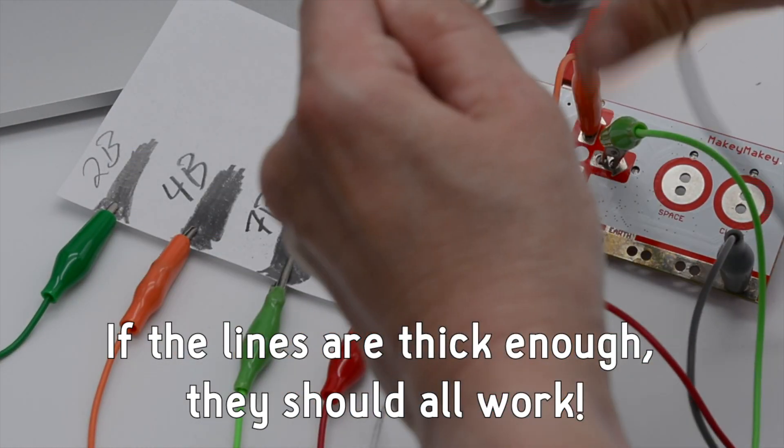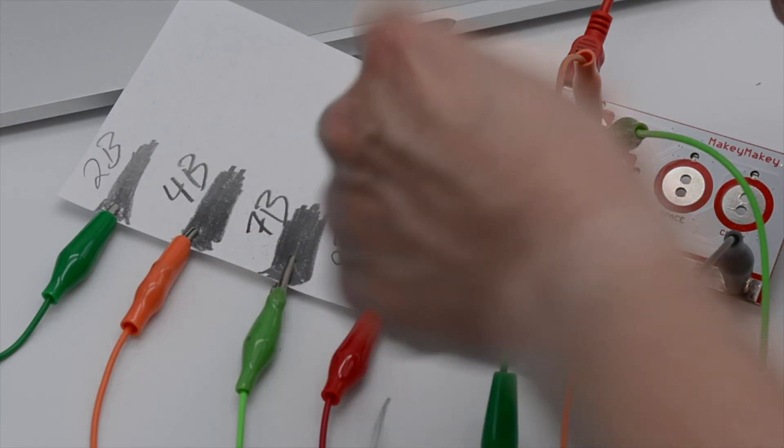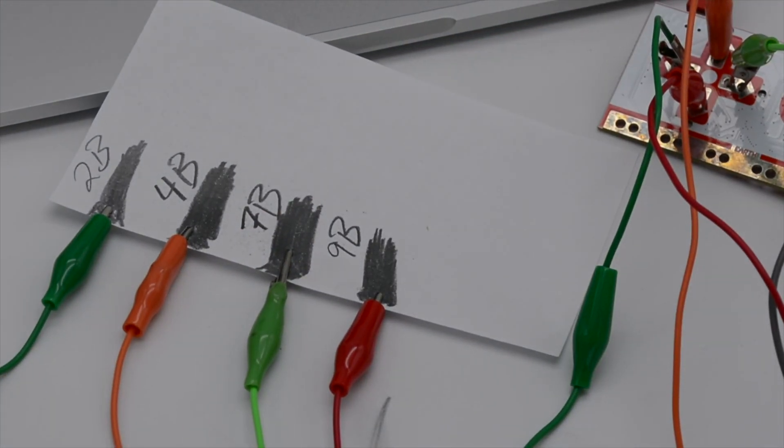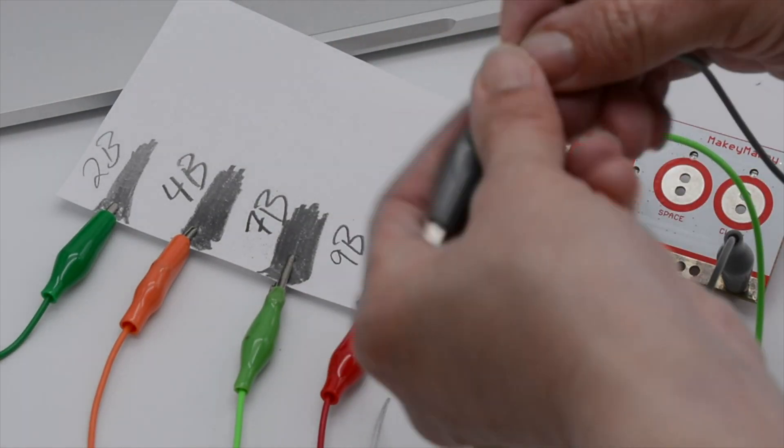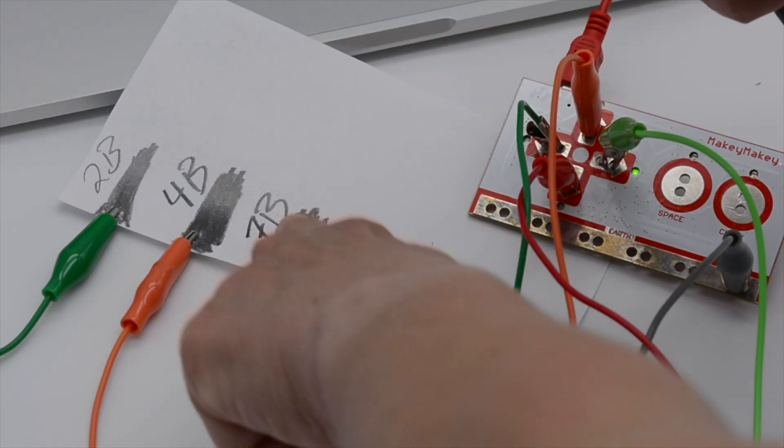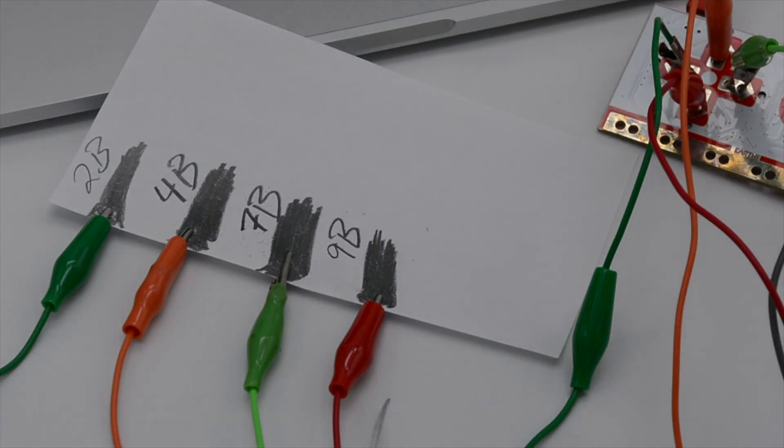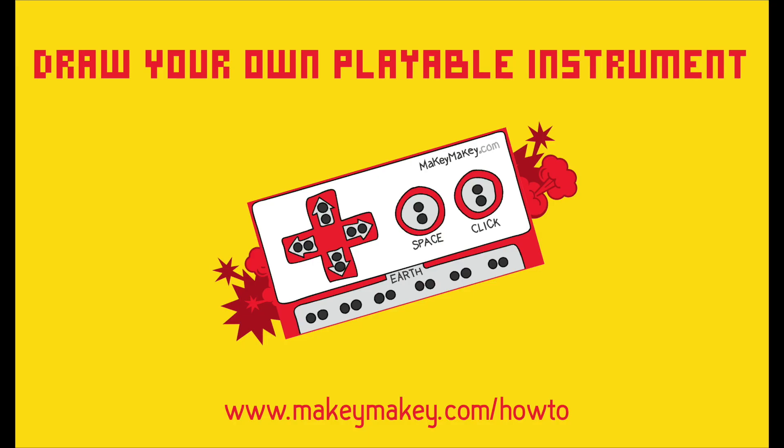Well look at that! It works with all my pencil lines, and that's because I've drawn really thick lines. You might notice if you're doing this experiment that the more you press with your finger, the more graphite comes on your finger, and now suddenly your drawing doesn't work anymore. Now that you know a little more about graphite and pencil lead, let's draw our own instrument.